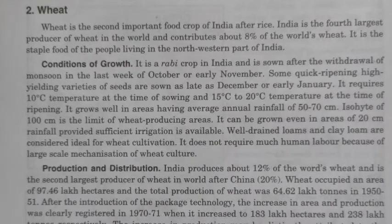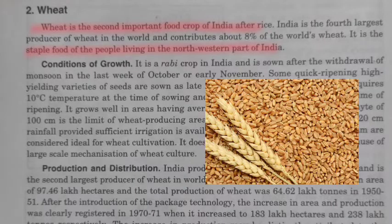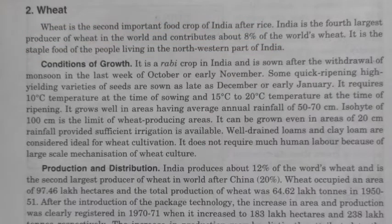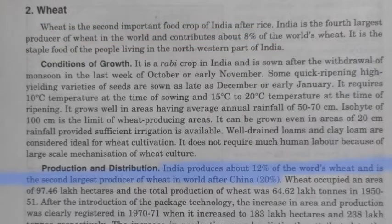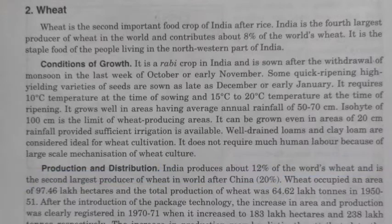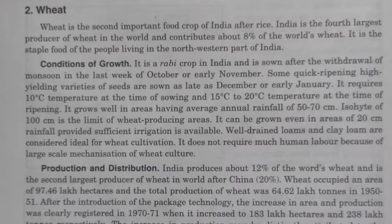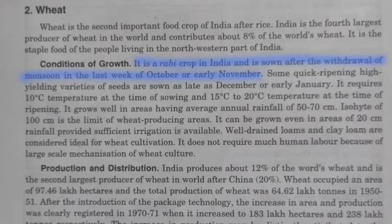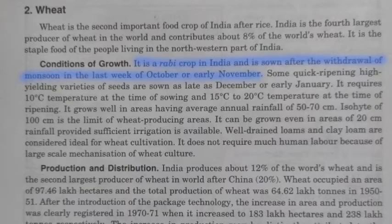The second most important food crop is wheat, which is a staple food especially in the northwestern part of India. India produces about 12 percent of the world's wheat and is the second largest producer after China. Wheat is a rabi crop, grown in the winter season, sown after the withdrawal of the monsoon in late October and early November.